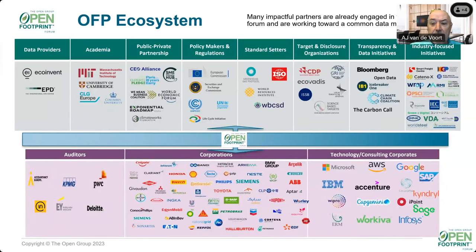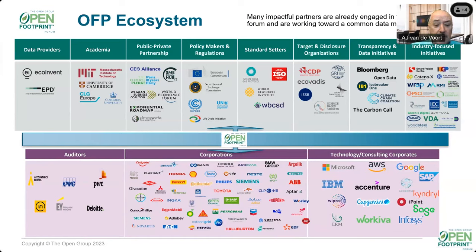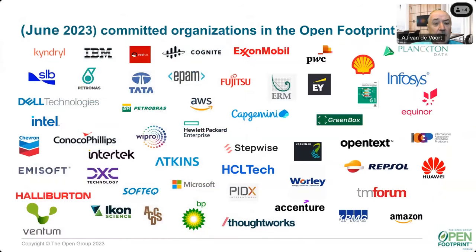There are many players in the sustainability or ESG ecosystem. At the top there are policymakers and standards setters, and at the bottom auditors, technology companies, and corporations. Many of those depicted here have already adopted the OFP standard. These are committed organizations. In total, we have about 288 members, and Nainish will provide more details on how OFP is organized in a few slides.